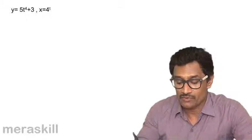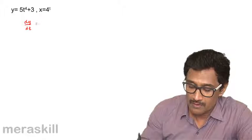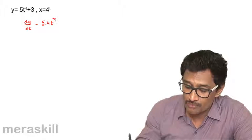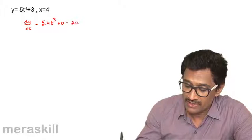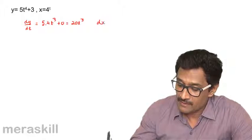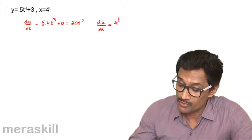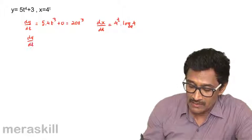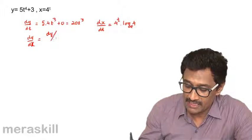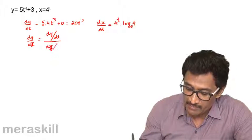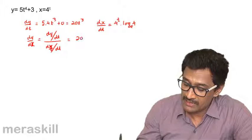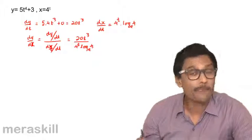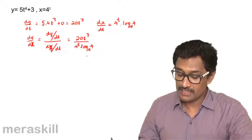We find dy by dt. You're differentiating with respect to t, so it's going to be 5 times 4t cube plus derivative of 3 is 0, so it's eventually 20t cube. Then dx by dt is 4 raised to t, so it will be 4 raised to t times log 4 to the base e. So dy by dx is dy by dt divided by dx by dt, which is 20t cube upon 4 raised to t log 4 to the base e.